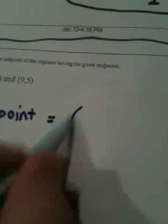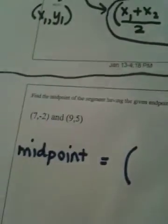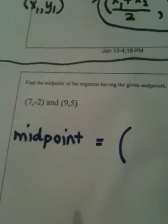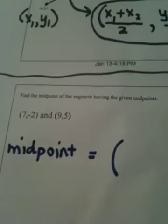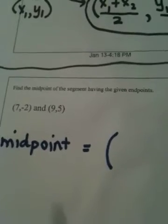Now remember from my previous video, the midpoint is an ordered pair. It has an x value and it has a y value. And the key word with midpoint is the word average. Remember what average means — add and divide by two.